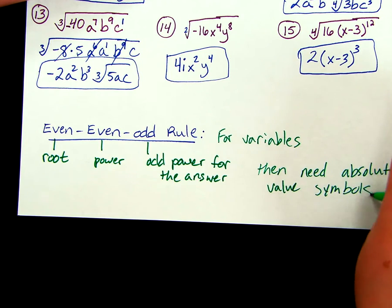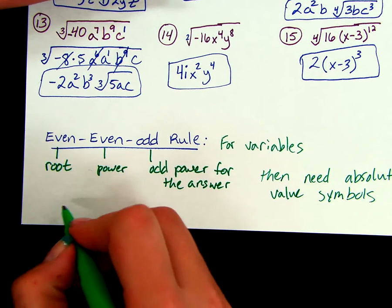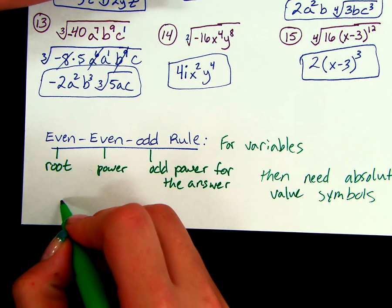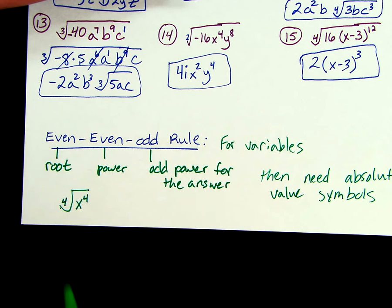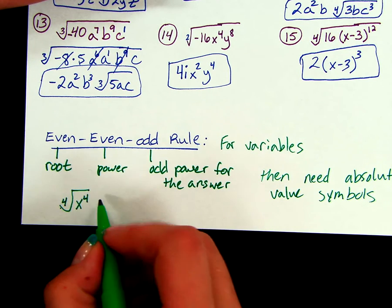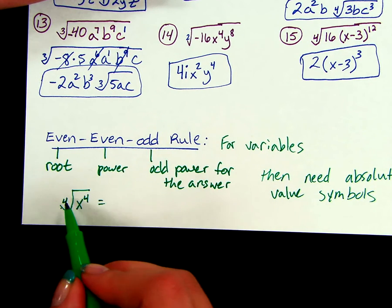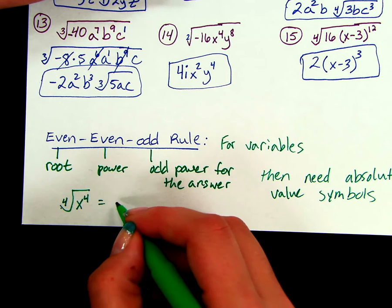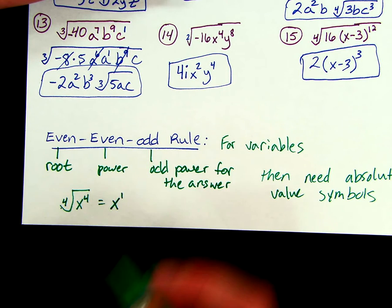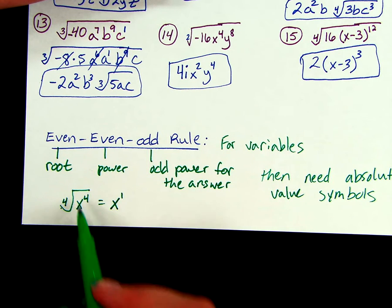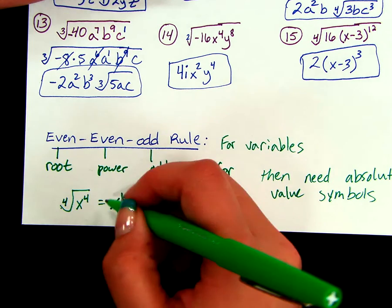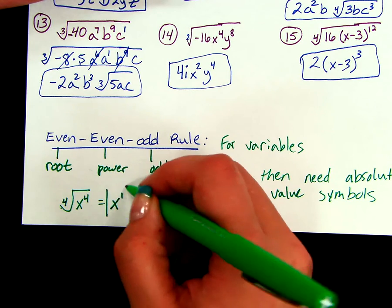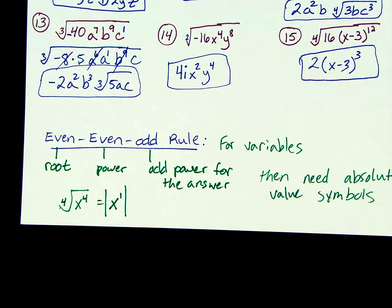So an example of that — let's say I was taking the fourth root of x to the fourth. If I simplify that, I'm just taking 4 and dividing it by 4, so it's going to be x to the first power. So I have even-even-odd, which means that I'm going to put this into absolute values.